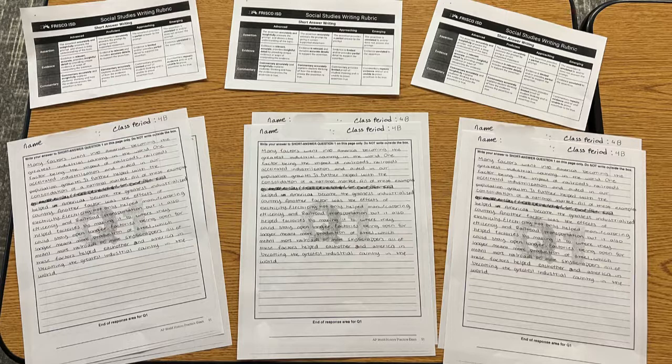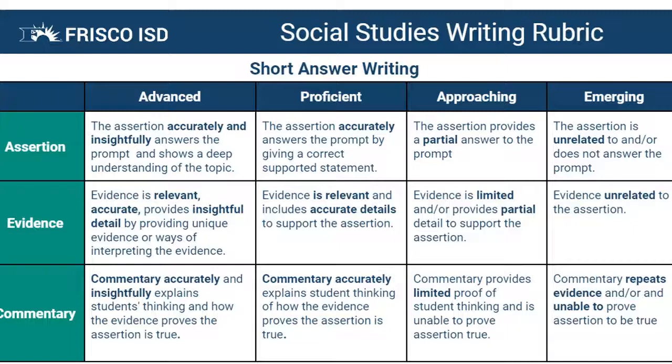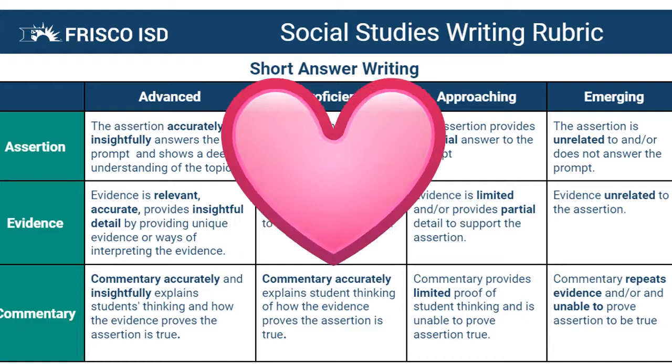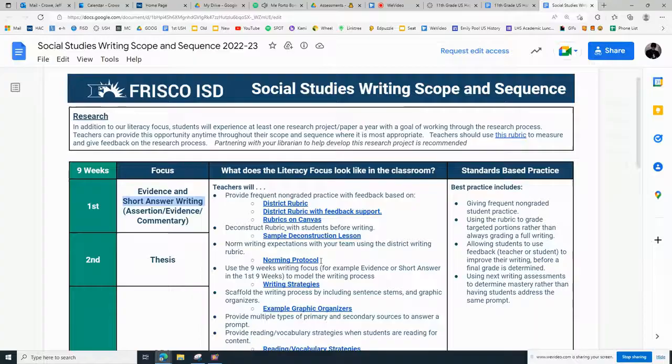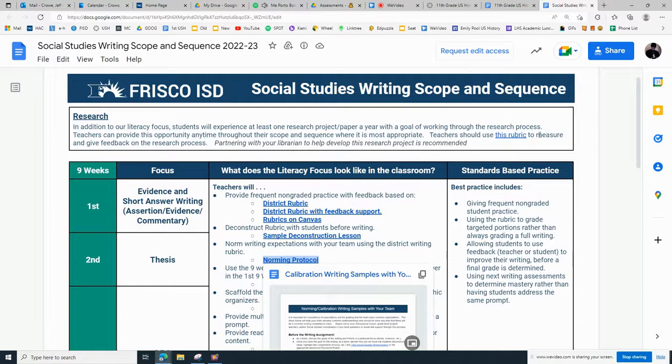To determine which system seemed to be the most appropriate, we began calibrating our understanding of the rubric by finding a few example short answer questions from students, and all three of us sat together in our PLC and graded them using the FISD social studies writing rubric. The calibration process sparked a lot of good conversations, and we were able to determine an equitable system that all three of us could agree upon for a fair assessment of student knowledge and skill level. On the FISD social studies curriculum canvas page, you can also find more examples of norming protocols and calibration ideas to use with your team.